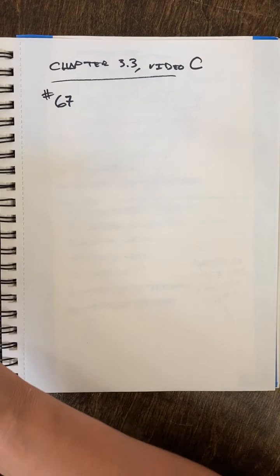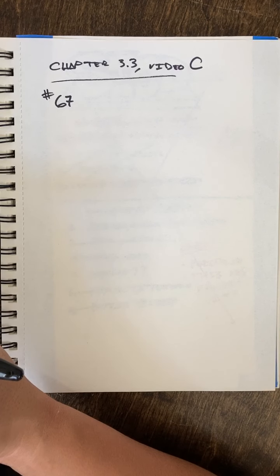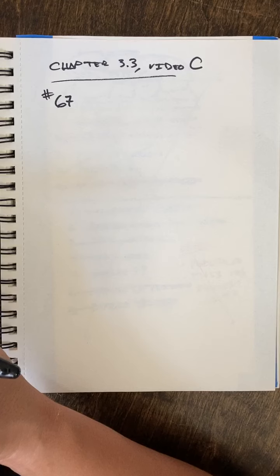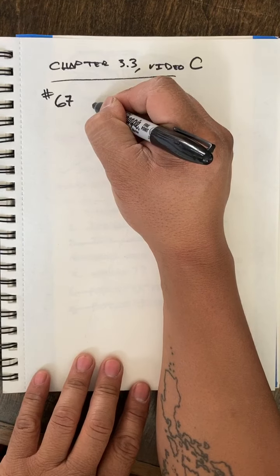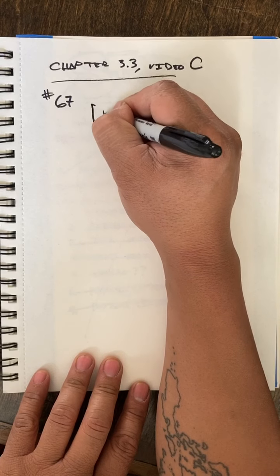Find the exact value of s in the given interval that has the given circular function value. You can see example 4B if you need help with that. And 67, they're locking in the domain for s at pi over two